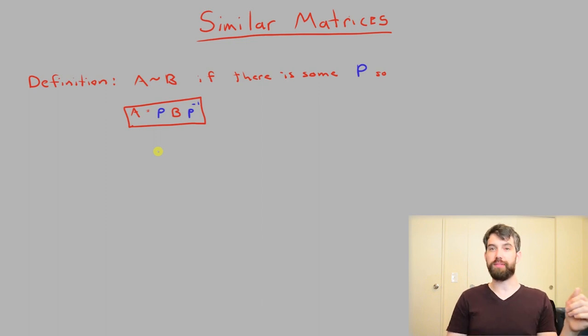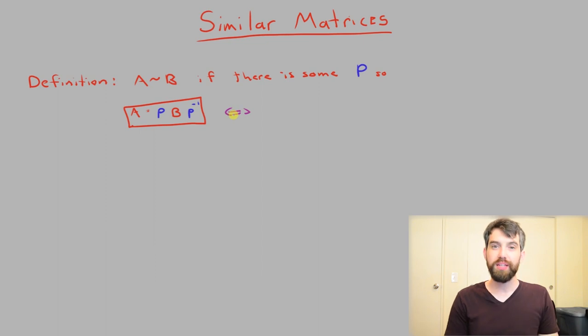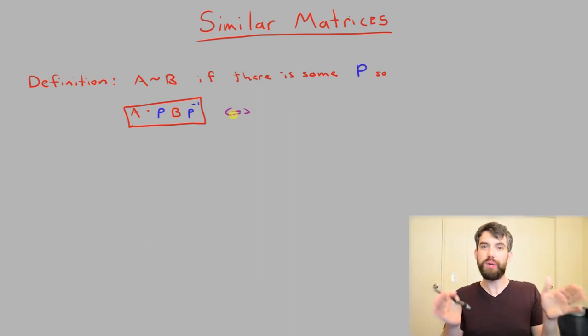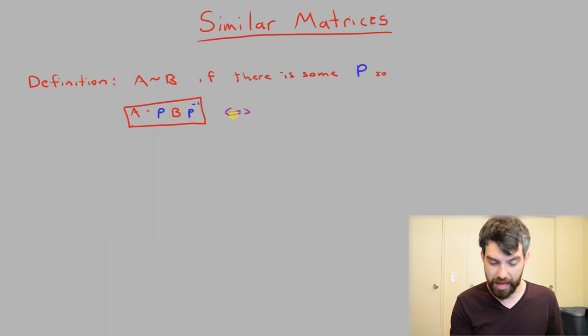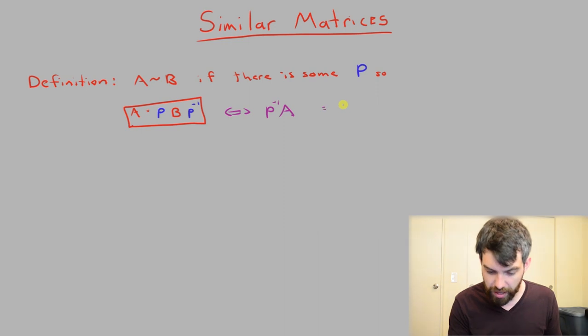I can also write this in a slightly different way that's completely equivalent. Suppose I multiply on the left of both sides by P-inverse. So I get P-inverse times A on the left-hand side. And then I would have P-inverse times P, but the inverse times P is just the identity matrix, and I'd be left with B.